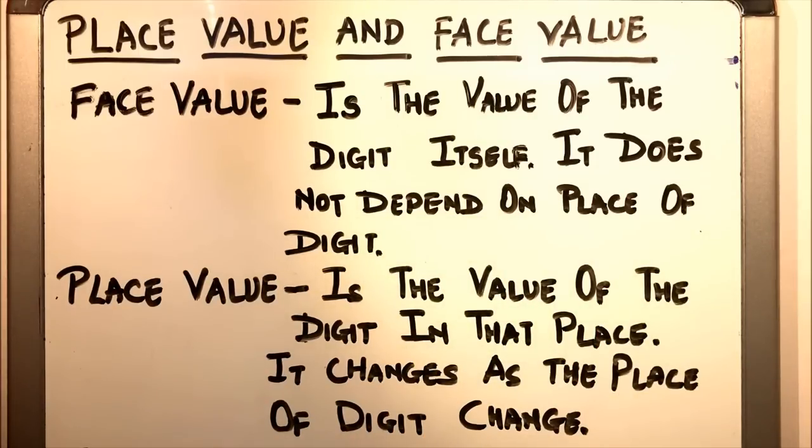Wherever you place the digit, the face value remains the same. Place value is the value of the digit in that particular place. It changes as the place of the digit changes.